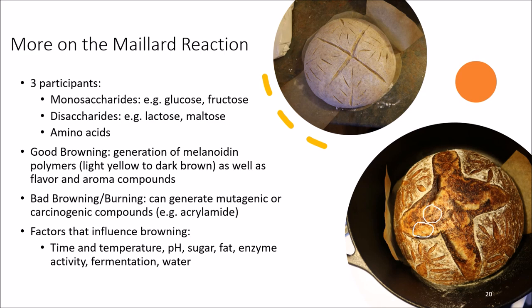Bad browning or burning occurs when the crust gets too dark or even black — a sign the Maillard reaction has gone overboard. When you eat burnt bread you could be consuming mutagenic or carcinogenic compounds such as acrylamide, which are not safe to eat. Essentially, you want bread browned to a degree that it's flavorful and a nice color, but not so browned that it's burnt and potentially harmful.